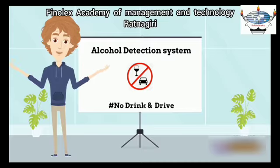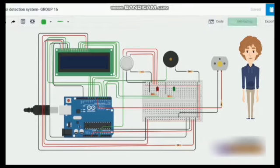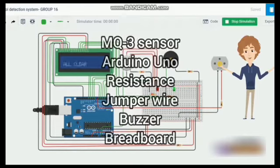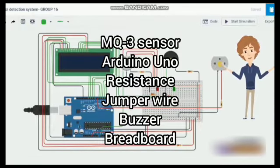Here is the simulation of our prototype. Here is the list of components required: MQ3 Sensor, Arduino Uno, LED, Resistance, Jumper Wire, Buzzer, and Breadboard.